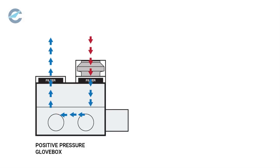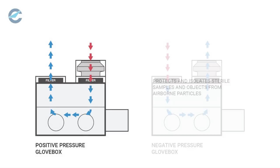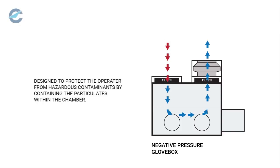A positive pressured system protects and isolates sterile samples and objects from airborne particles. A negative pressured system is designed to protect the operator from hazardous contaminants by containing the particulates within the chamber.